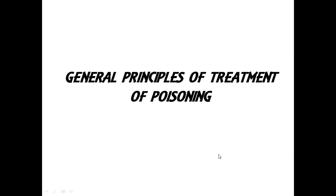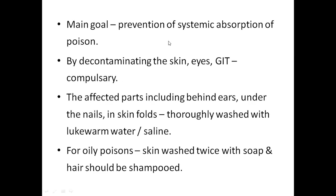Next, general principles of treatment of poisoning. If a person has taken poison, the main goal is to prevent systemic absorption of the poison. We must decontaminate the GIT, skin, and eyes, as poison in these areas can be absorbed into the body. So we have to decontaminate these areas perfectly.